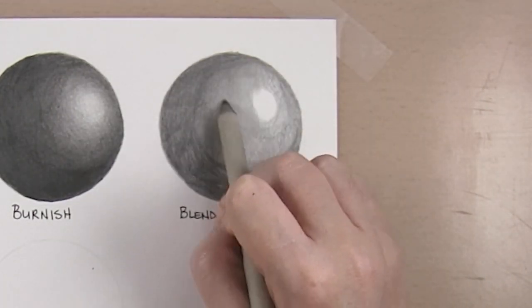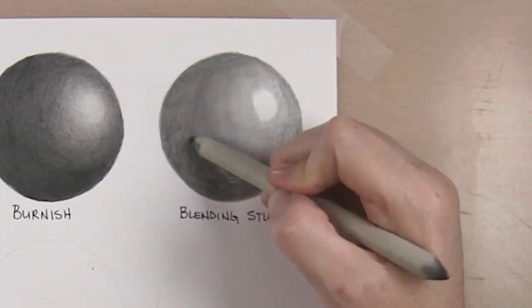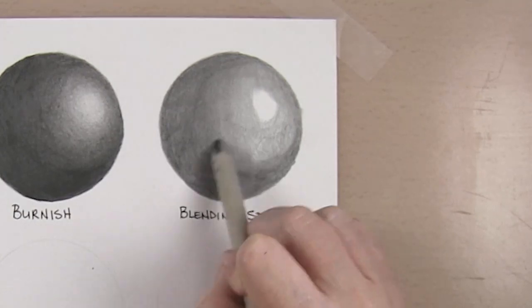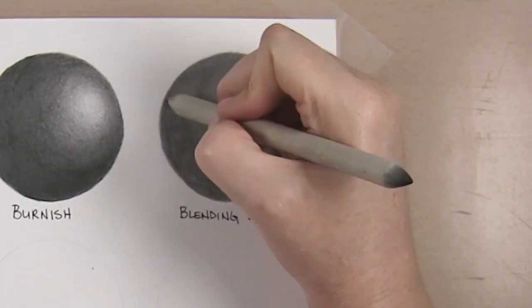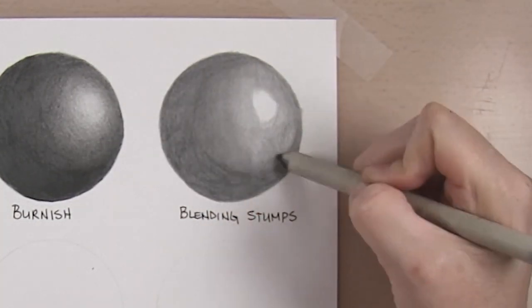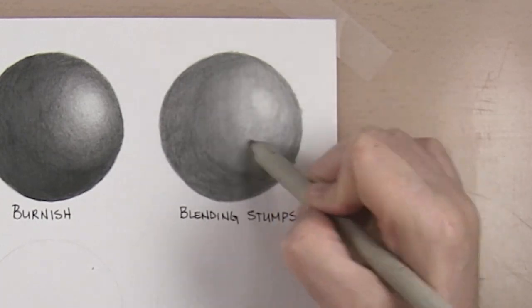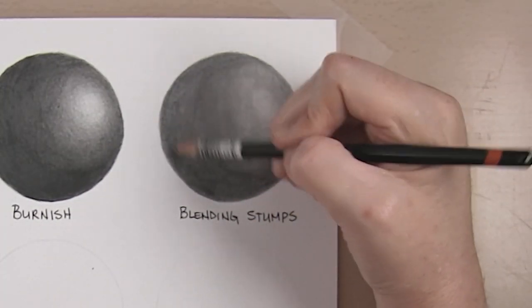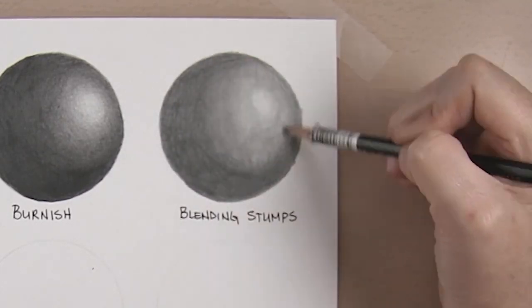After laying down enough graphite on the paper you can then rub the stump over the area to blend it out. I like to use it at an angle unless I need to get into small areas where I will then use the tip. Make sure to use a circular motion or single directional strokes. This will help avoid start and stop points and leaves a very smooth well blended finish.